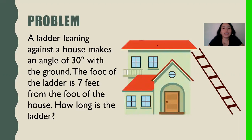So what is this problem about? Okay, I see one response about how long is the ladder. The question is, what is this problem about? So as I look at this, it's about a ladder that leans up against the house. And then our second read. A ladder leaning against a house makes an angle of 30 degrees with the ground. The foot of the ladder is seven feet from the foot of the house. How long is the ladder?